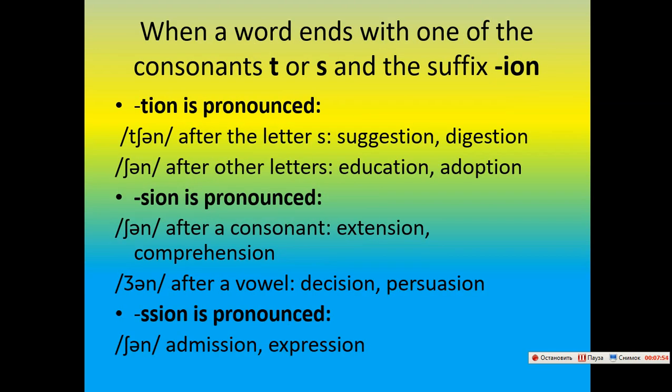When a word ends with certain consonants and the suffix -ion is added, it is pronounced 'shun' after T, D, S: suggestion, digestion, education, adoption. The suffix -sion is pronounced 'zhun' after vowels: decision, reservation; and 'shun' after consonants: extension, comprehension, admission, expression.